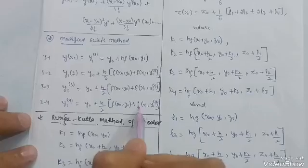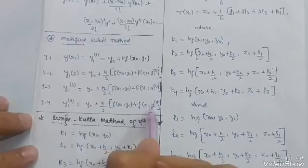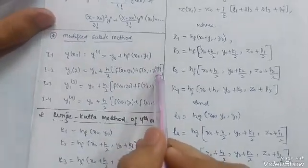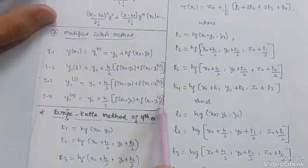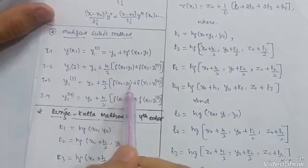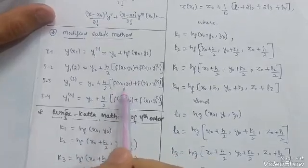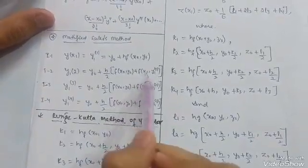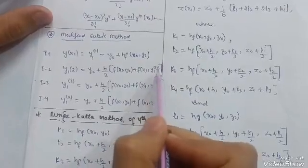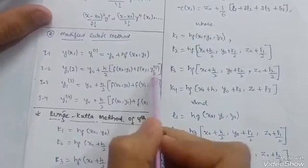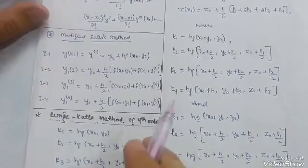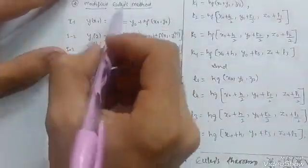To remember Modified Euler's method easily: the pattern is y₁⁽¹⁾, y₁⁽²⁾, y₁⁽³⁾ — you only change the superscript power each iteration. The terms f(x₀, y₀) and f(x₁, …) remain the same structure; only the y₁ power inside f(x₁, ·) increases from 1 to 2 to 3.